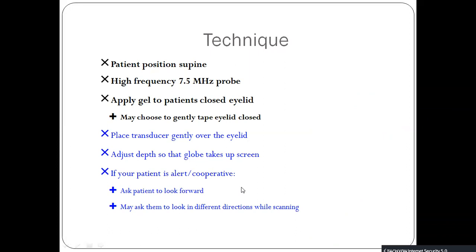Now the technique for measuring the optic nerve diameter. The first thing is patient positioning — the patient should be positioned supine. Use the high frequency or linear probe. Apply gel with the patient's eye closed. You can also apply a tape over the eyelid. Then place the transducer gently over the eyelid. Adjust the depth so that the globe takes up the screen.